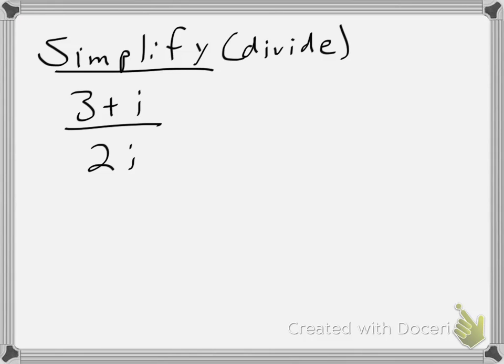When I have a single term with the i, the simplest way to get rid of the i is to multiply it by another i. And to balance it out, I'll do the same thing to the numerator. So when I multiply, in my denominator, I'll have 2i squared. In the case of my numerator, I'll have to distribute my i to both terms. So that'll give me 3i plus i squared.